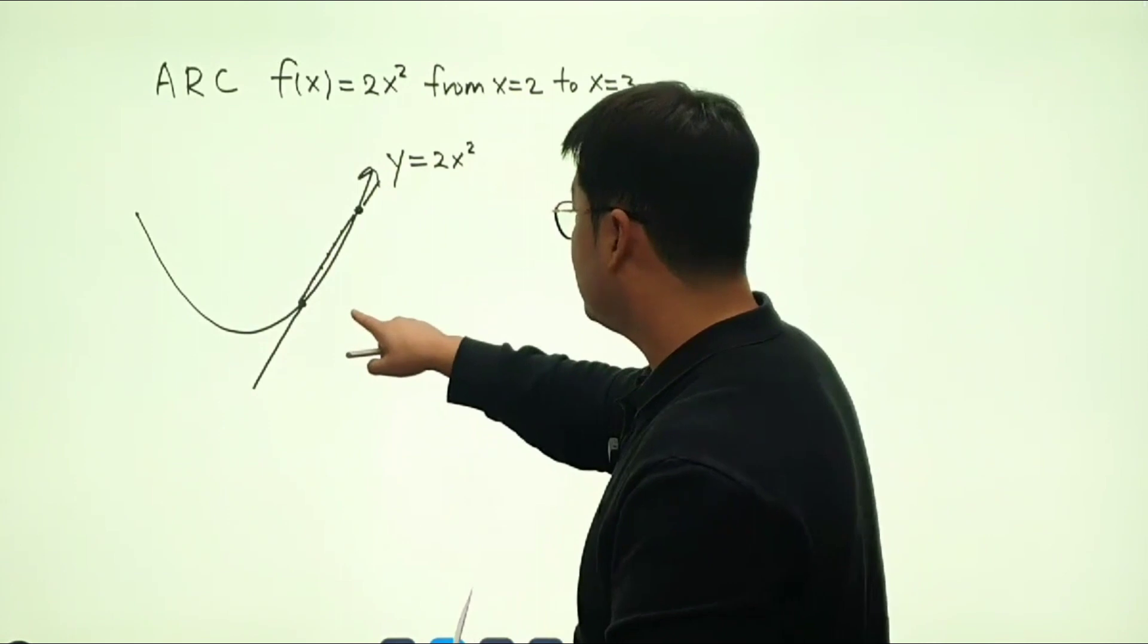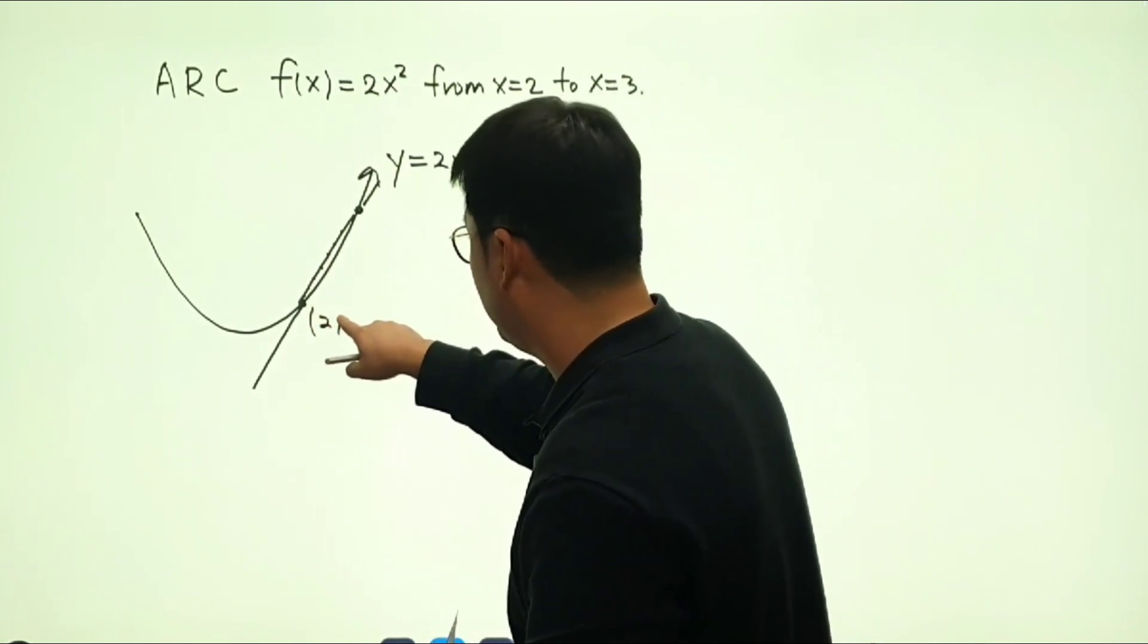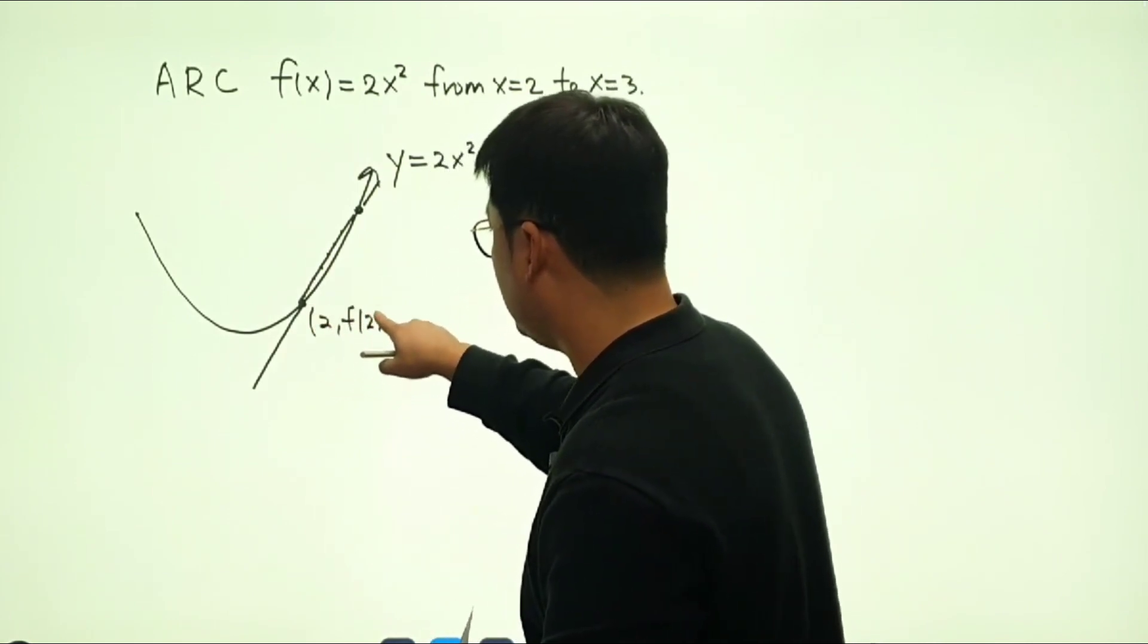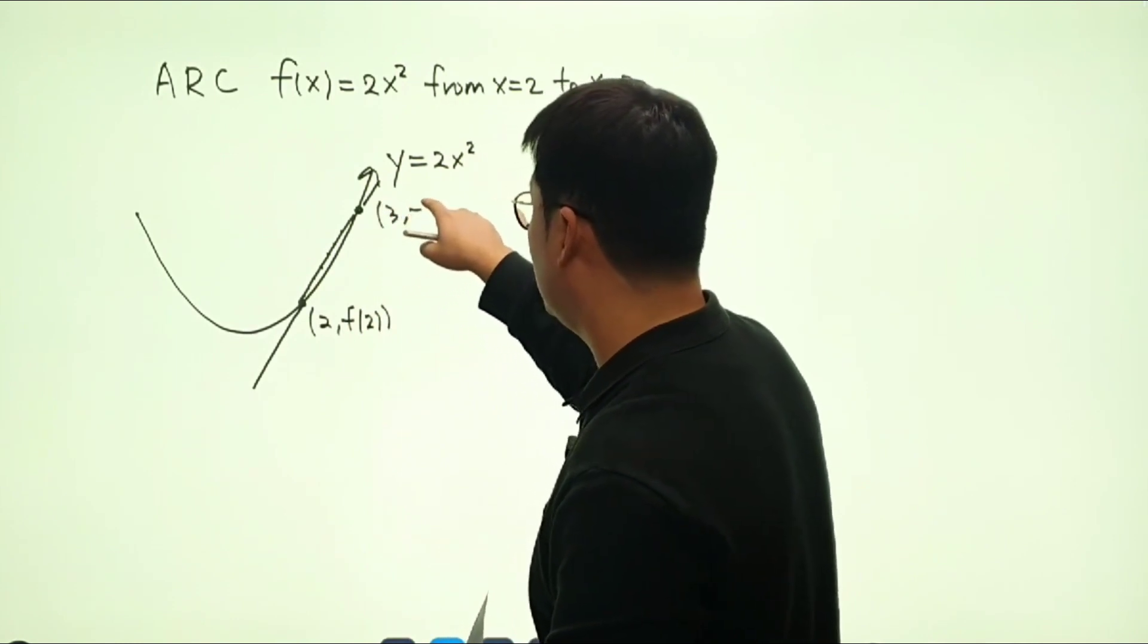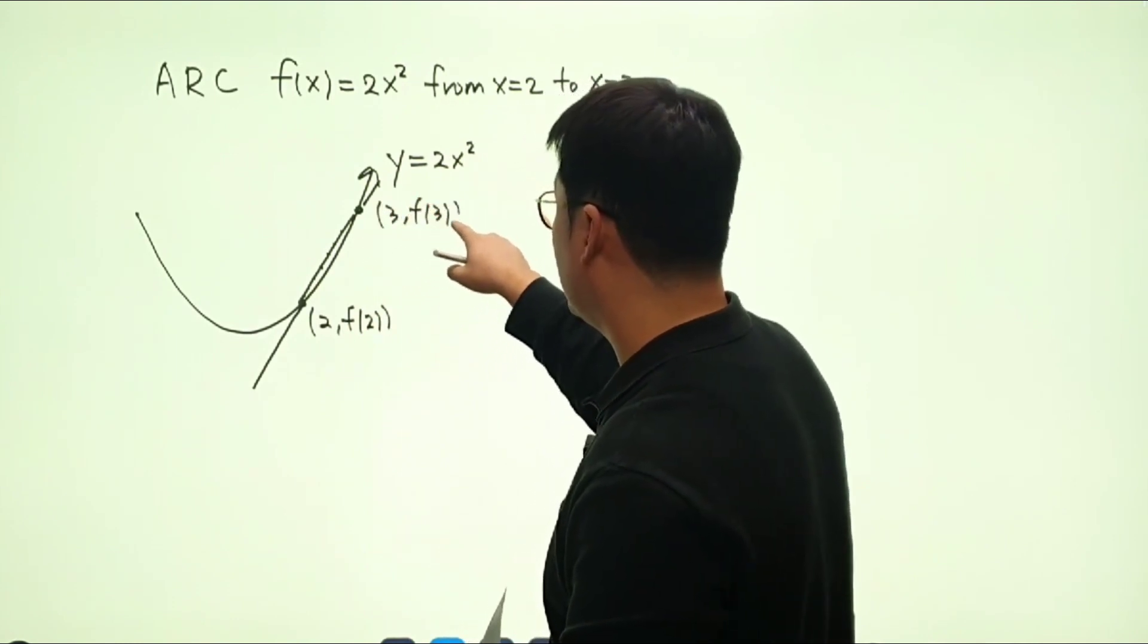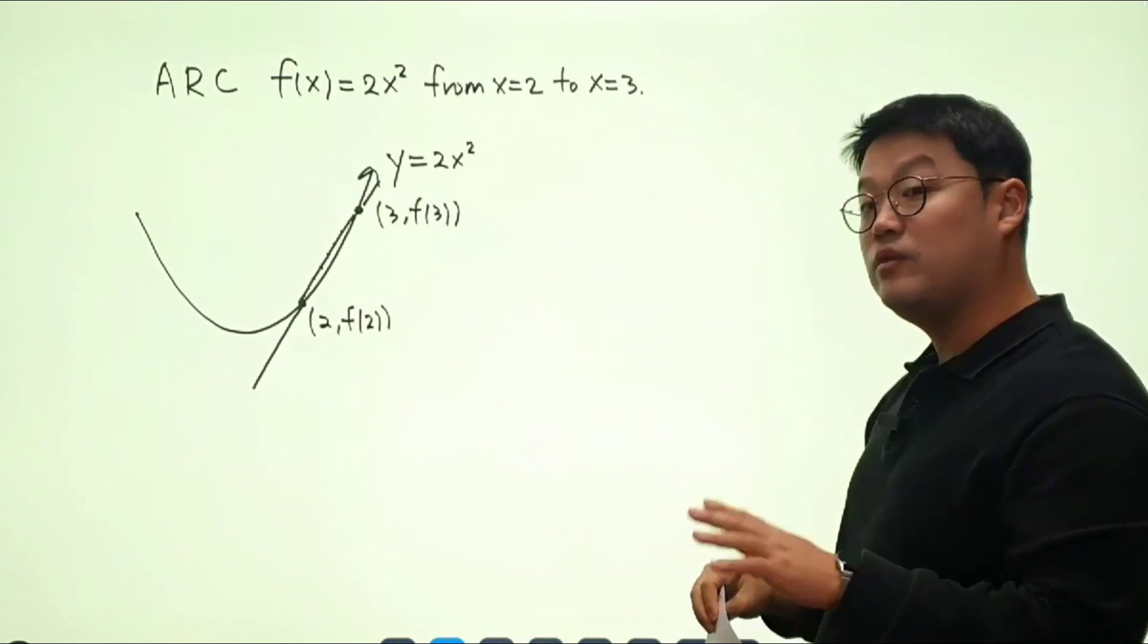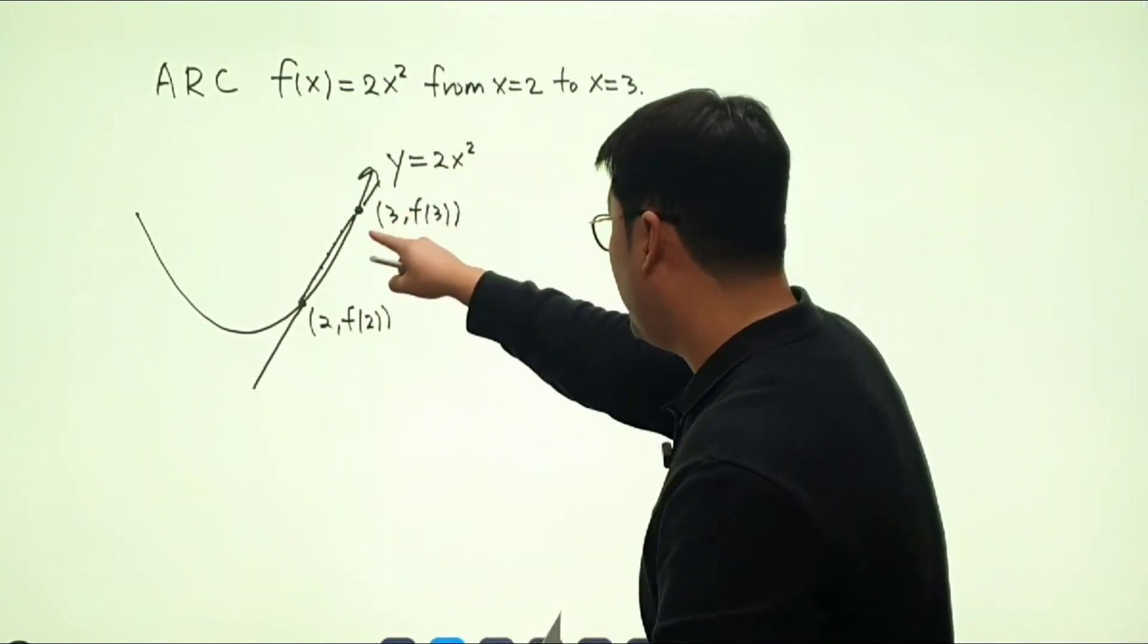So what we're looking for is, this is going to be 2 comma f of 2. And you can actually see that this is going to be 3 comma f of 3. And all I need to do is just to find out the slope between those two points.